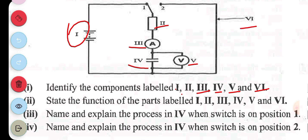The next question asks for the function of each component. The battery provides the electrical energy required to charge the capacitor. The resistor limits the current flow in the circuit. The ammeter measures the current flowing through the circuit. The capacitor stores electric charges in an electric field. The voltmeter measures the voltage across the capacitor. The wire is the conductor — the path through which electrical energy flows.